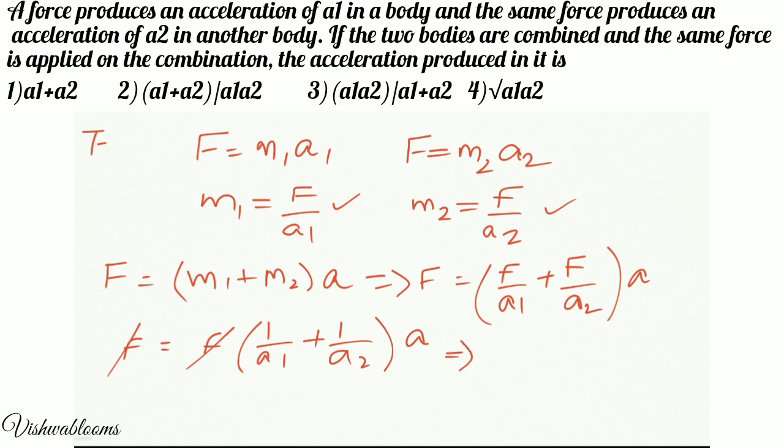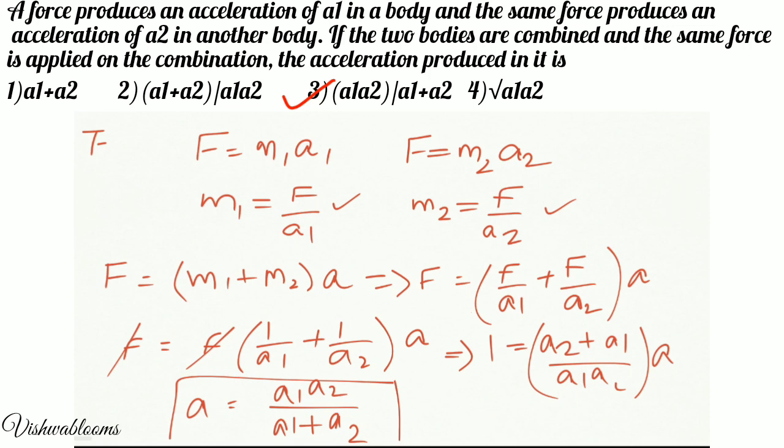So 1 is equal to A2 plus A1 by A1 A2 into A. Now, I am going to send this term to the left side. So A is equal to A1 A2 by A1 plus A2, and this brings us the final answer.